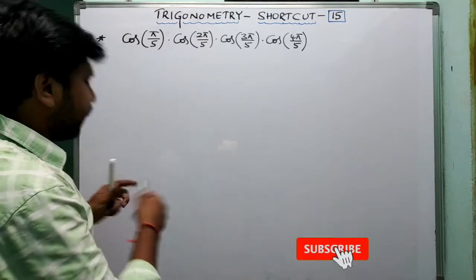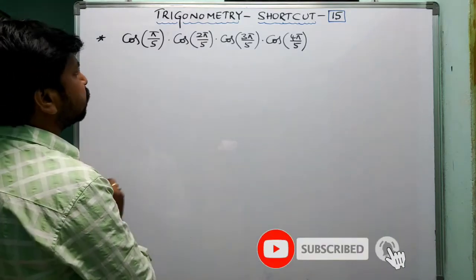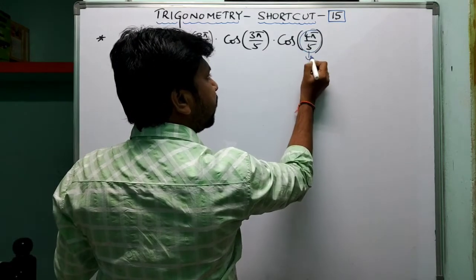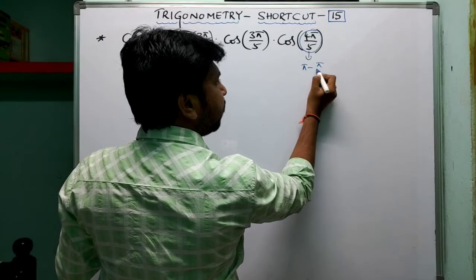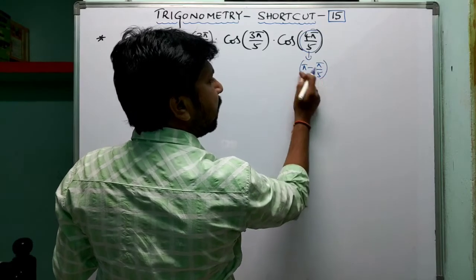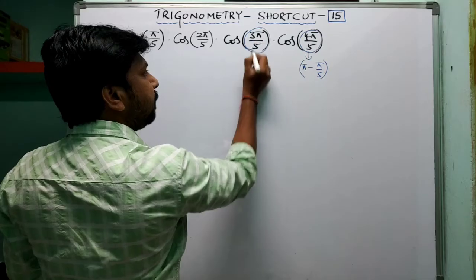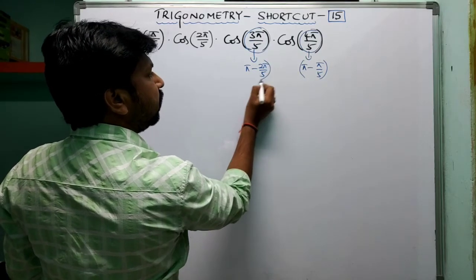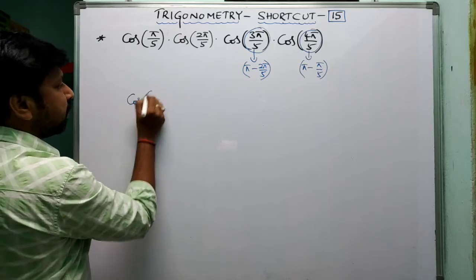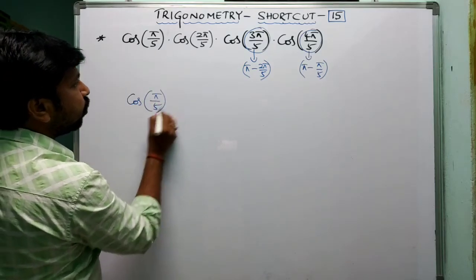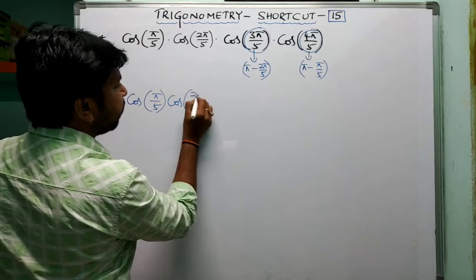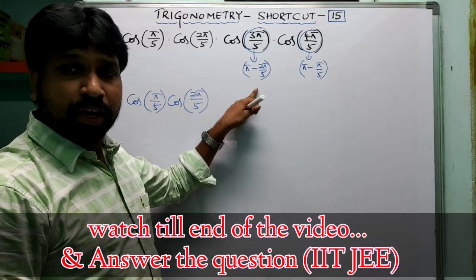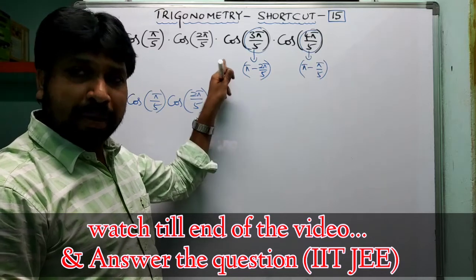Now let's look at how to solve this kind of question. cos(π/5) · cos(2π/5) · cos(3π/5) · cos(4π/5). Note that cos(3π/5) can be written as cos(π − 2π/5), and cos(4π/5) can be written as cos(π − π/5). So the total expression becomes cos(π/5) · cos(2π/5) · cos(π − 2π/5) · cos(π − π/5). Since cos(180° − θ) is in the second quadrant, cos(180° − θ) = −cos(θ).